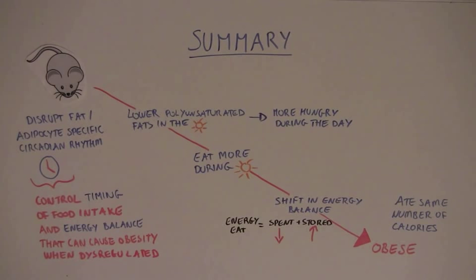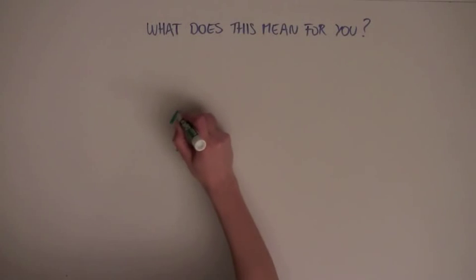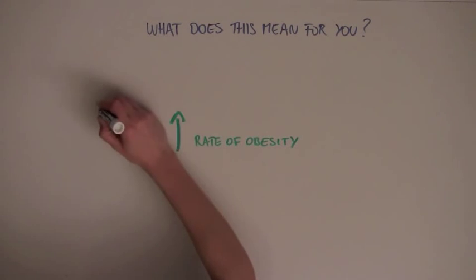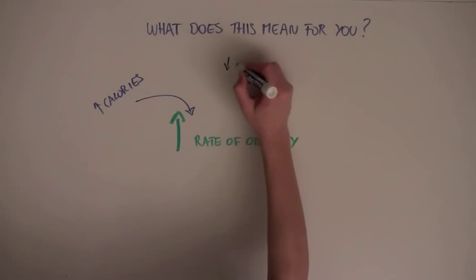So, what does this mean for you? The rate of obesity has increased extraordinarily over the past 100 years, so it might be fun to consider the relevance of this study in the context of evolution. Certainly, the increase in obesity is due to more calories in our diet and less exercise.